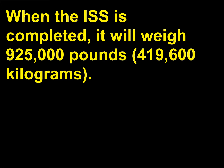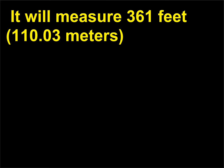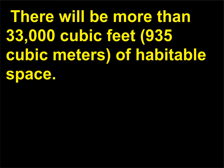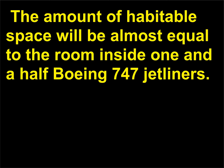When the ISS is completed, it will weigh 925,000 pounds, 419,600 kilograms. It will measure 361 feet, 110.03 meters, from end to end, or the equivalent of a football field including the end zones. There will be more than 33,000 cubic feet, 935 cubic meters, of habitable space — almost equal to the room inside one and a half Boeing 747 jetliners.